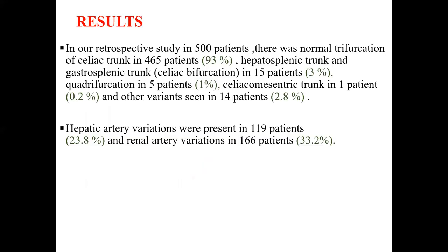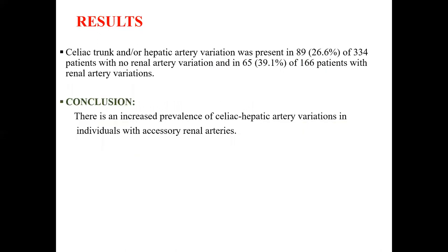In our retrospective study of 500 patients, normal trifurcation of the celiac trunk was present in 465 patients (93%). Hepatosplenic trunk and gastrosplenic trunk were seen in 15 patients, quadrification in 5 patients, celiacomesenteric trunk in 1 patient, and other variants in 14 patients. Hepatic artery variations were present in 119 patients and renal artery variation in 166 patients. Celiac trunk or hepatic artery variation was present in 89 of 334 patients with no renal artery variation, and in 65 of 166 patients with renal artery variation. There is an increased prevalence of celiac-hepatic artery variation in individuals with accessory renal arteries.